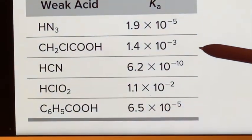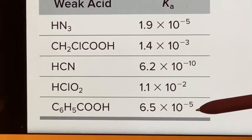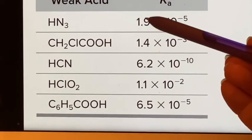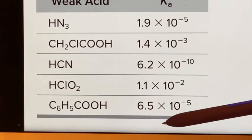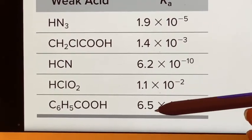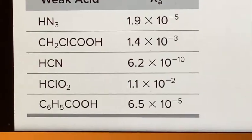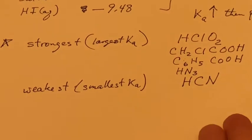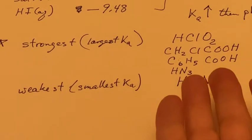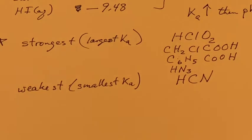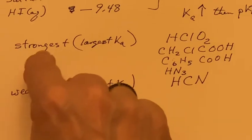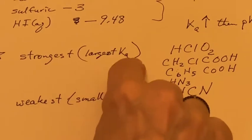Now I have two others that I have to look at because they both have 10 to the minus 5. So I have to look at this part. 6.5 is bigger than 1.9. So 6.5 is going to be stronger than that one. So the 6.5 and then this one. All I needed to know was the Ka and I could rank them in terms of how strong they are, and they wanted decreasing. So I started with the strongest, which was going to be the one that dissociated the most, which had the largest Ka.